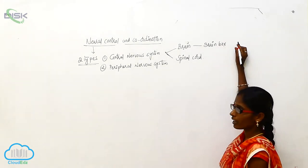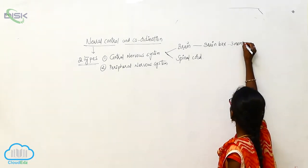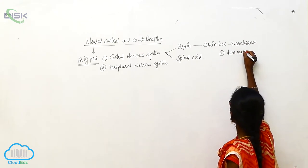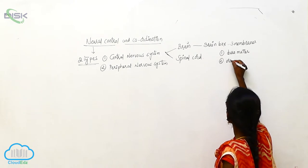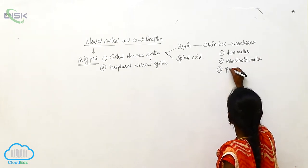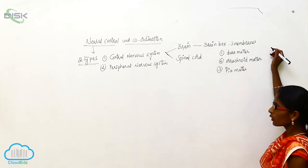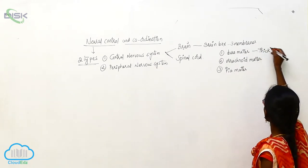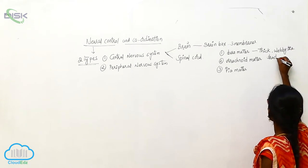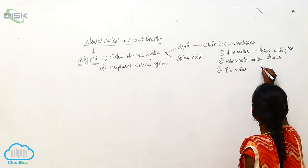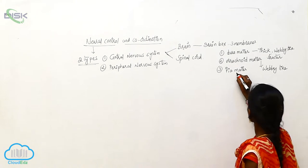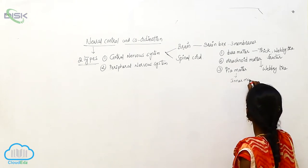The Brain is covered by three membranes. The first one is Dura Mater, the second one is Arachnoid Mater, and the third one is Pia Mater. Dura Mater is a thick, webby-like structure, and Arachnoid Mater is also a webby-like structure.